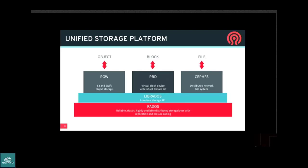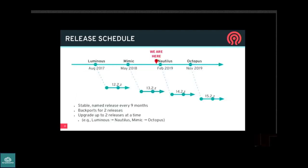Ceph is an open source upstream project. We release every nine months, and every release is named after a species of cephalopod. Nautilus is the next release, coming out at the end of February. The one after that is Octopus, about nine months later. The features I'm talking about today are a mix of what exists in Nautilus and previously, plus things we're planning to build after that.